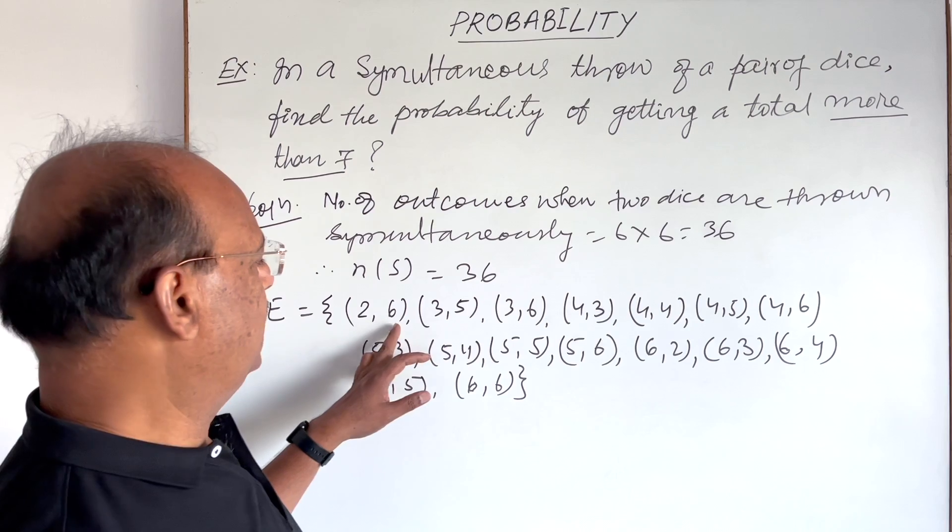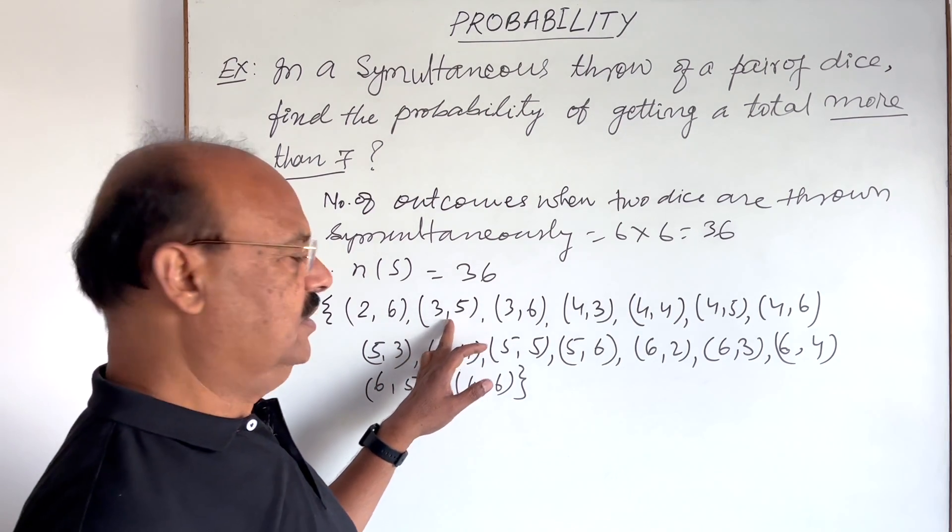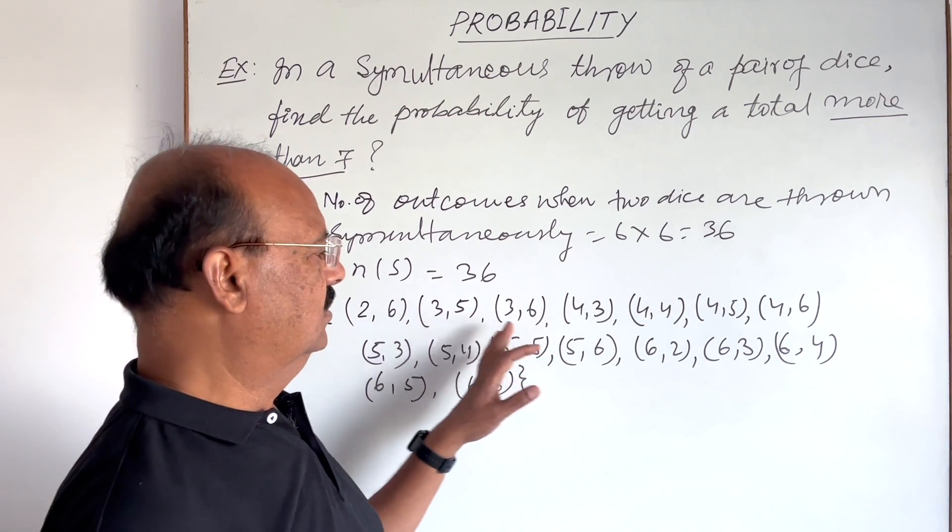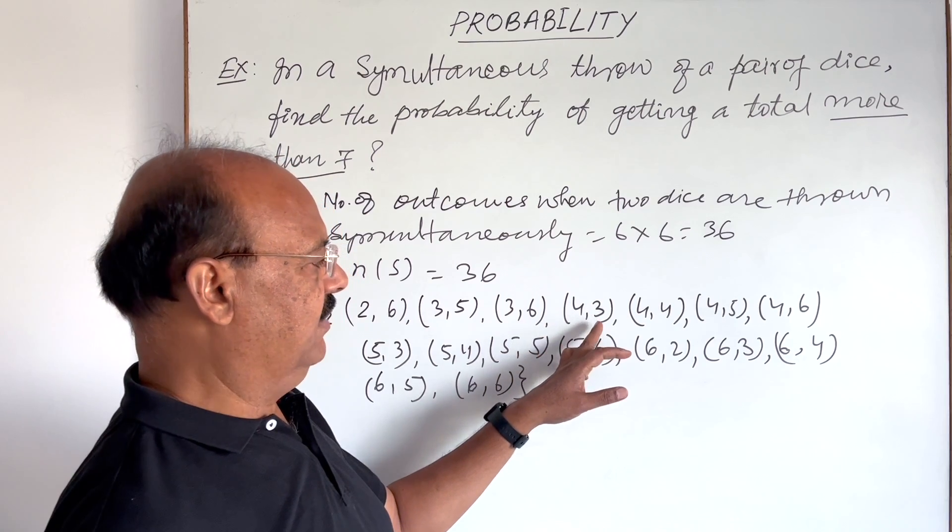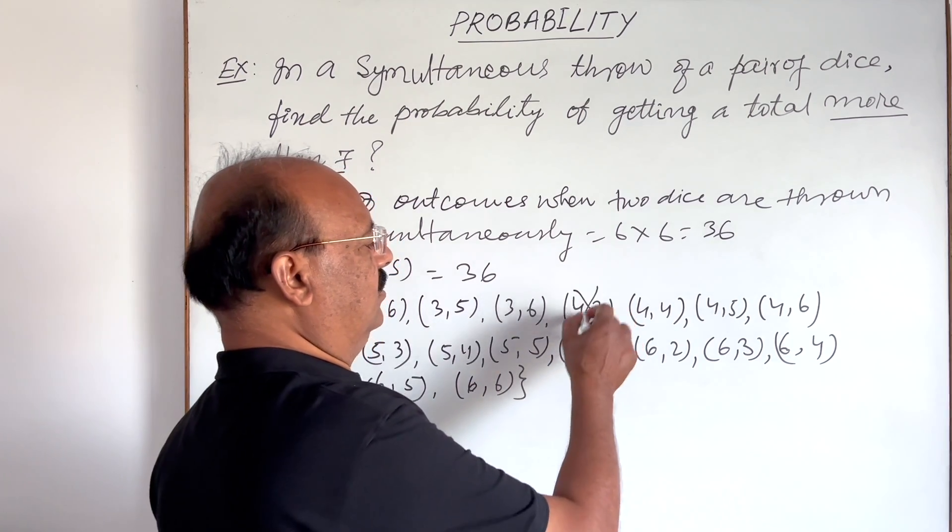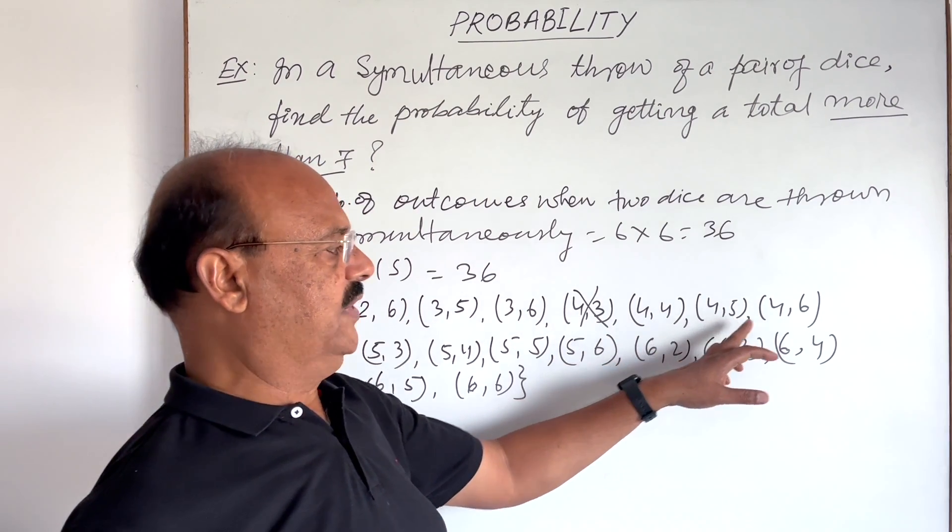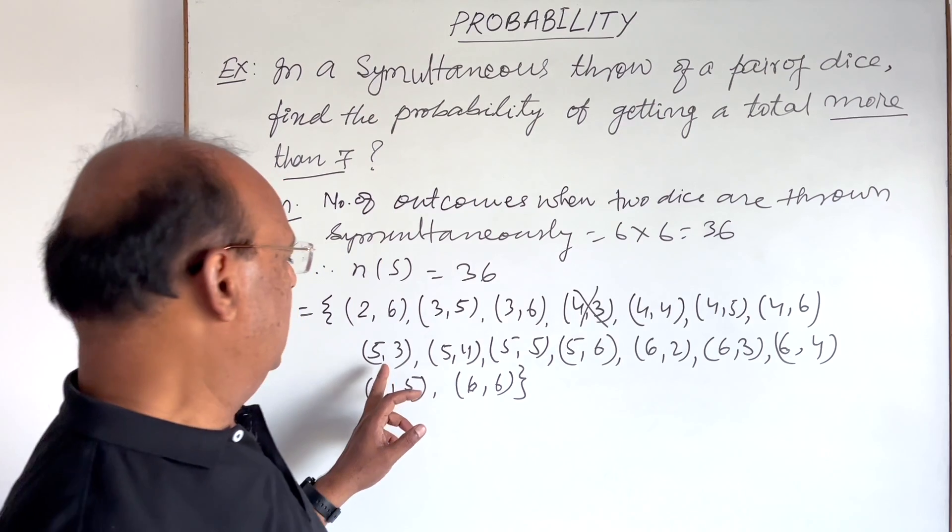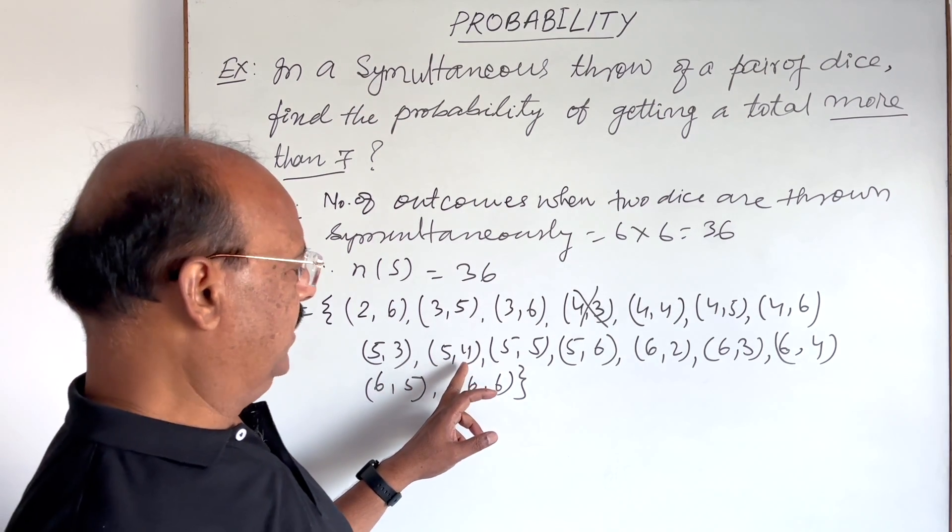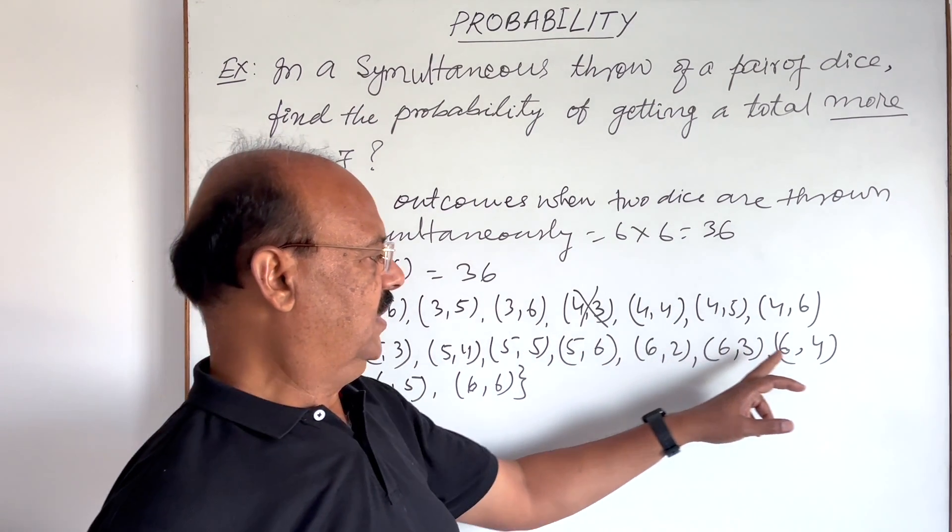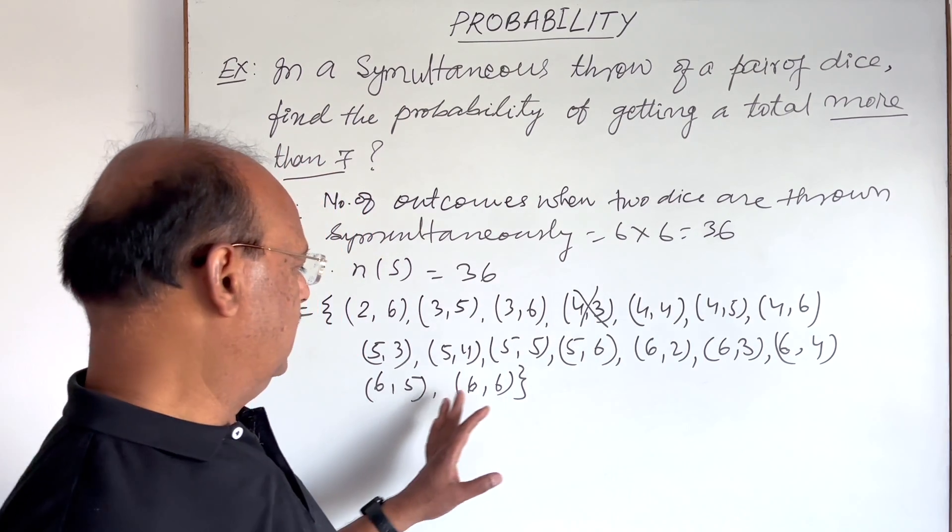Let us check once again. Two, six is eight. Three, five is eight. Three, six is nine. Four, three is seven. This is not acceptable, should be more than seven. And this is four, four, eight. Four, five, nine. Four, six, ten. Five, three, eight. Five, four, nine. So rest of the outcomes are okay.